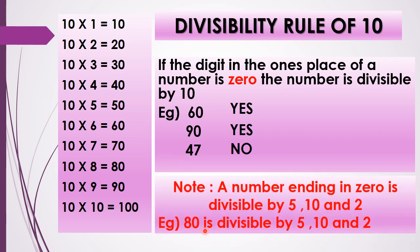Now children, let us note this point: a number ending with 0 is divisible by 5, 10, and 2. Let us check with the example of 80. For 5, the 1's place should have 0 or 5 — yes, there is a 0. For 10, the rule says there must be 0 in the 1's place — yes. For 2, the number in the 1's place must be 0, 2, 4, 6, or 8 — yes, there is a 0. So 80 is divisible by 5, 10, and 2.